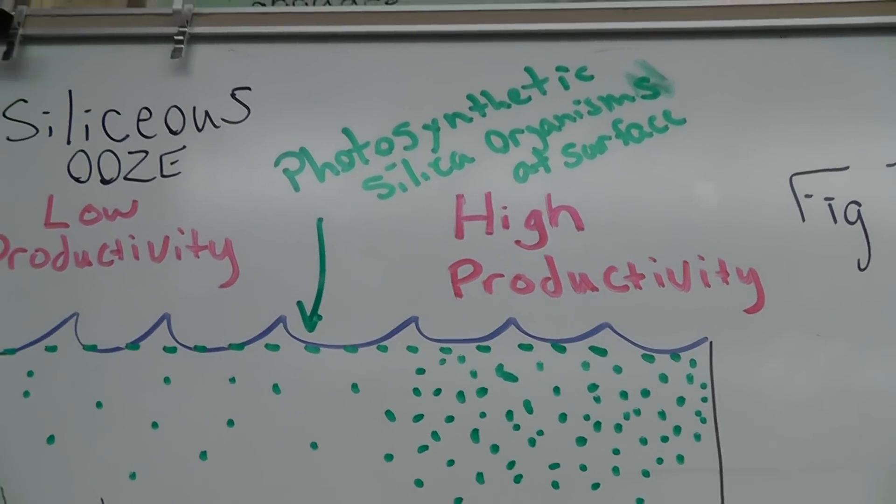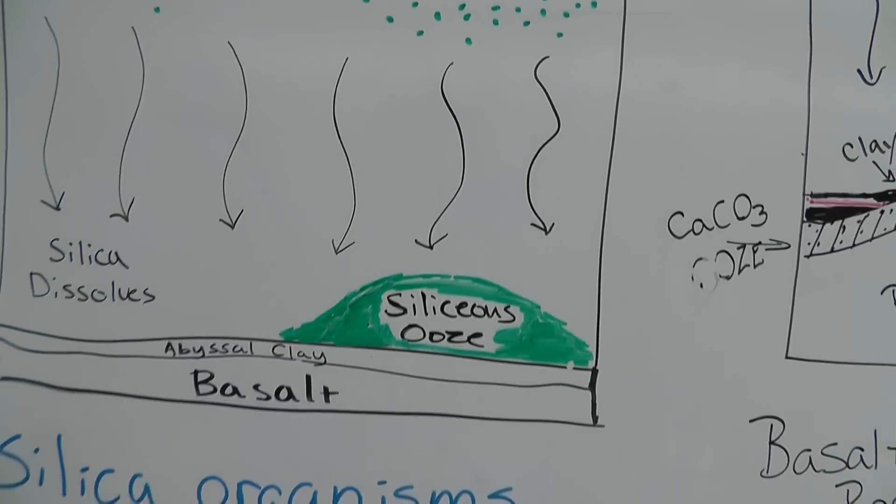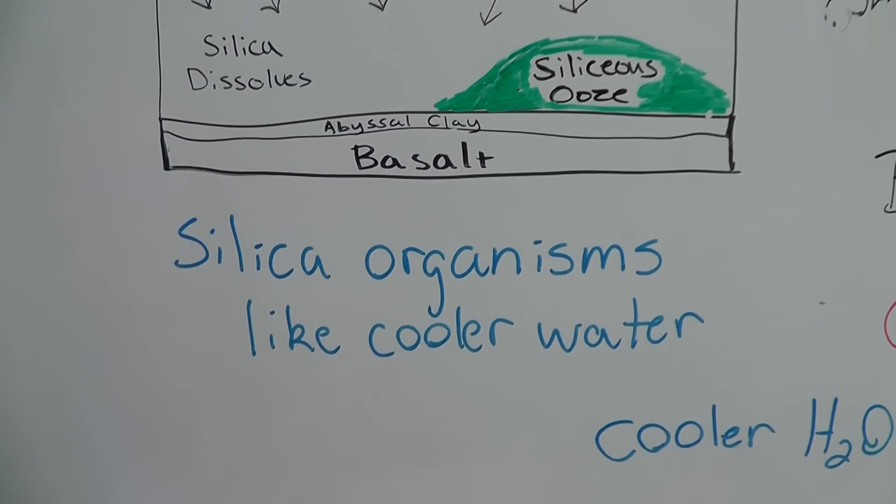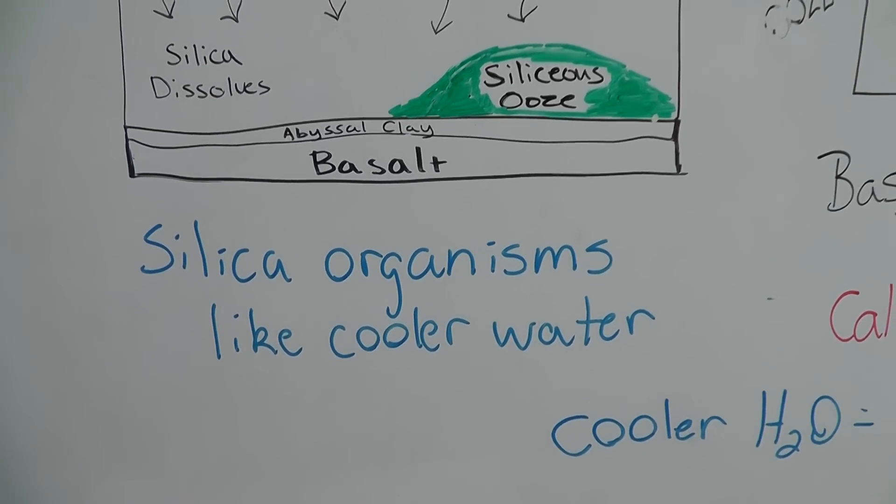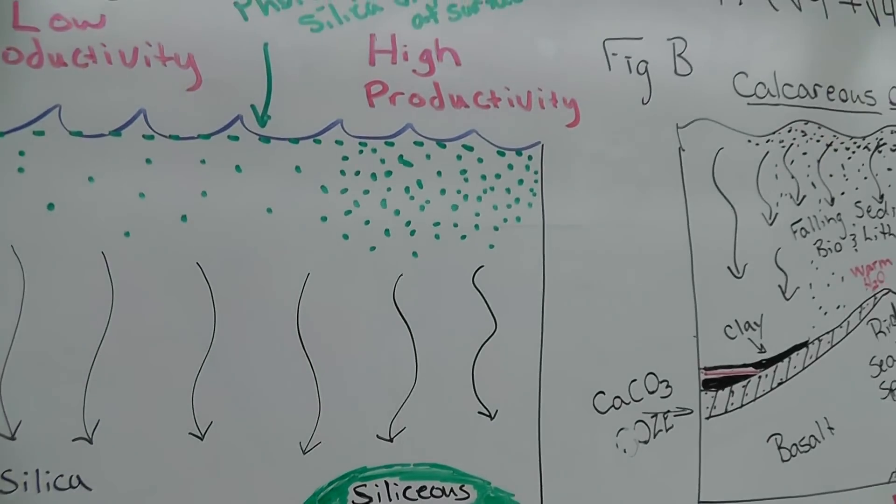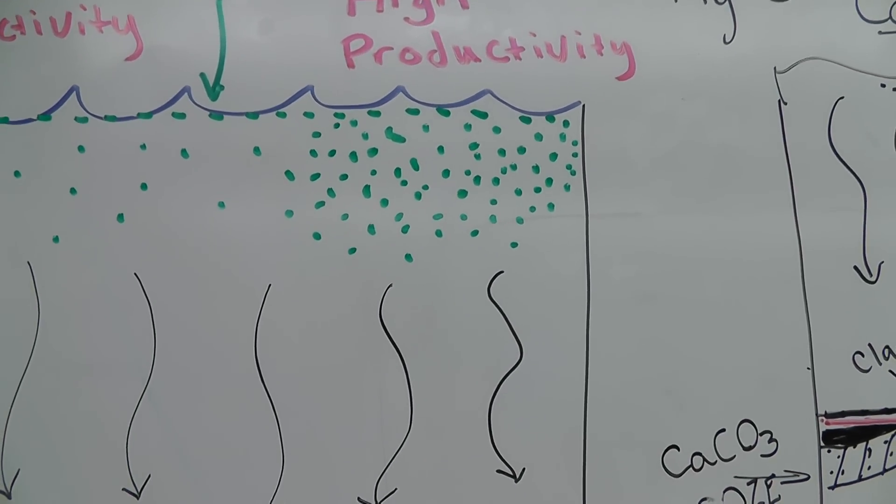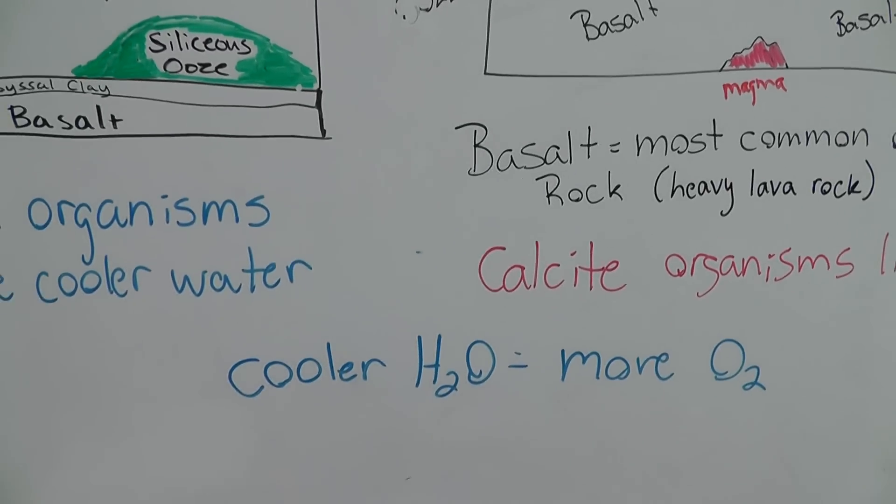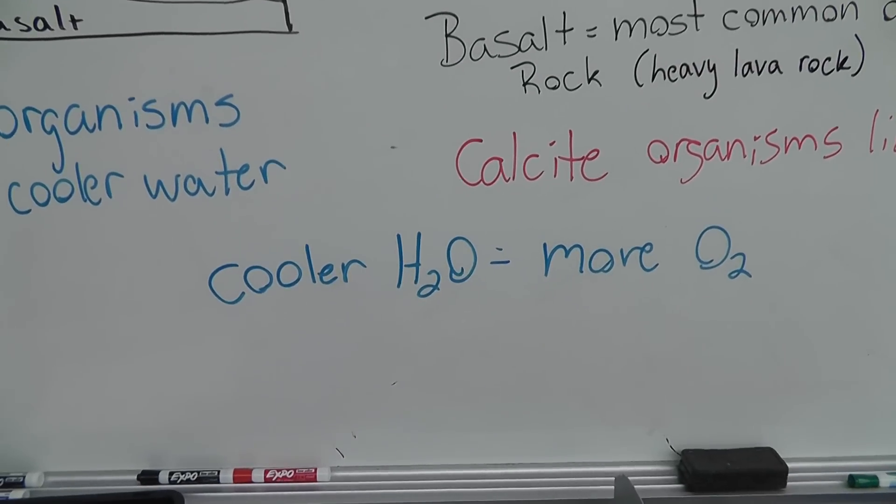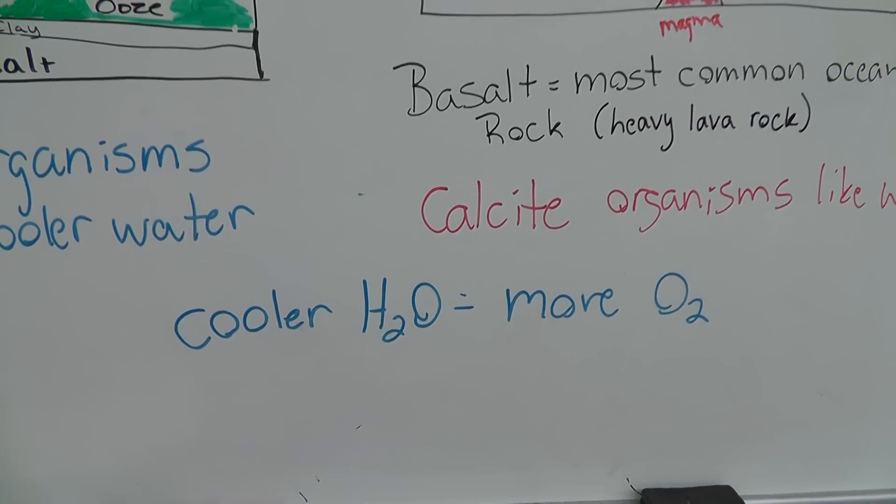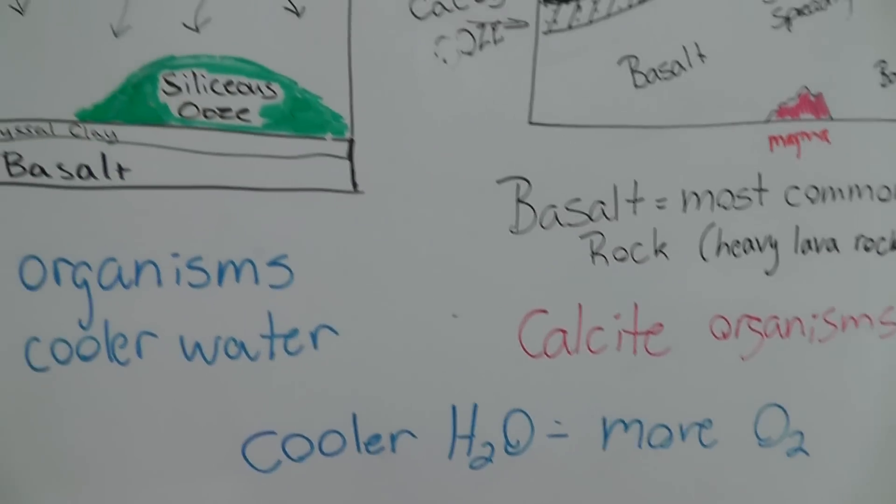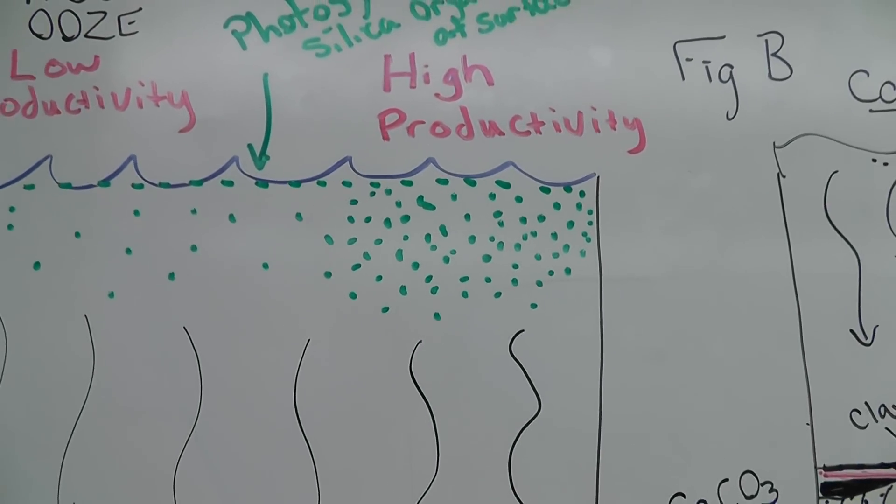So we look and we think hey silica producing organisms like cooler water. So that tells us what might be true about the water in this area. There's a good chance that it is probably a little bit cooler. And then we look again and we see that cooler water means more oxygen. Oxygen diffuses better in cooler water so there might be more oxygen.